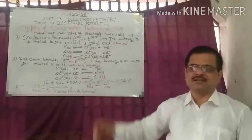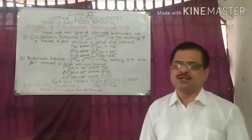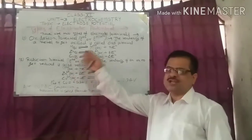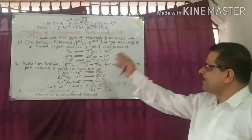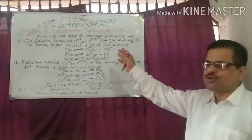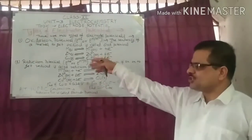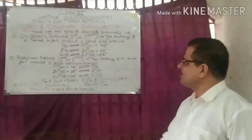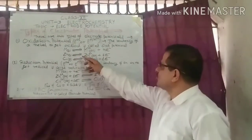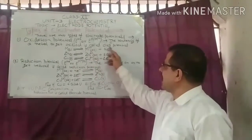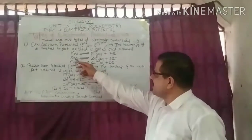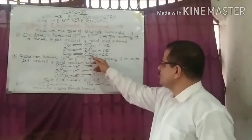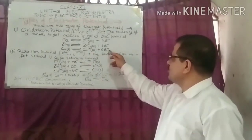There are two types of electrode potential: oxidation potential and reduction potential. The tendency of a metal to get oxidized — that is, the tendency of a metal to lose electrons — is called oxidation potential. For example, a metal is converted into a metal ion by oxidation. Zinc is converted into Zn²⁺ by losing 2 electrons; copper is converted into Cu²⁺ by losing 2 electrons.